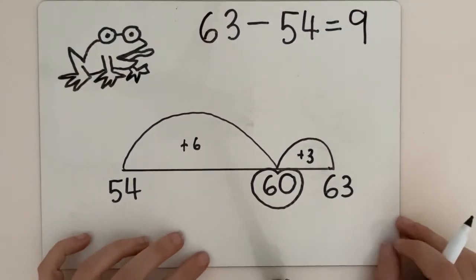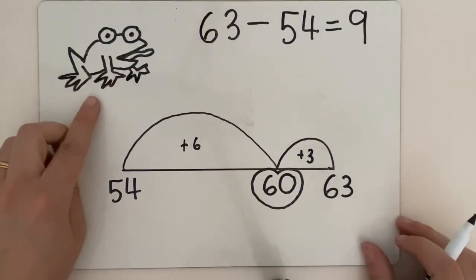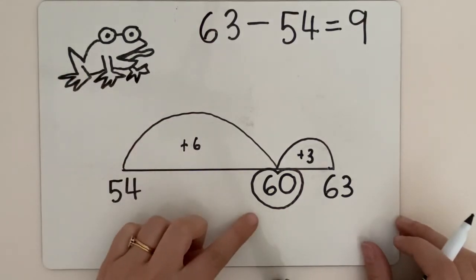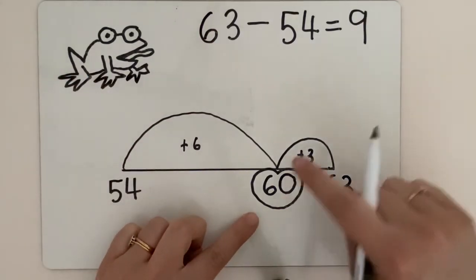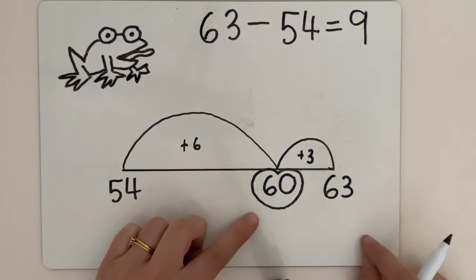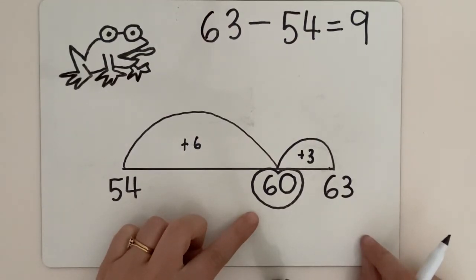It's very straightforward. Remember your frog. Your frog always likes to jump to the big fat round tens lily pad and then you can do your smaller jump from there. You can have a go at the workbook pages. I'm sure you'll be able to do this easy peasy.